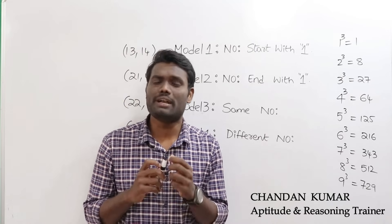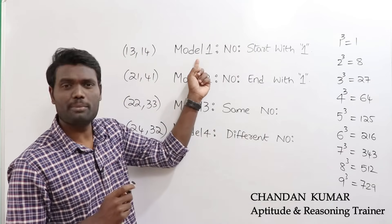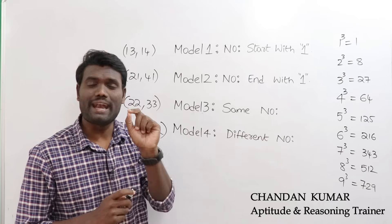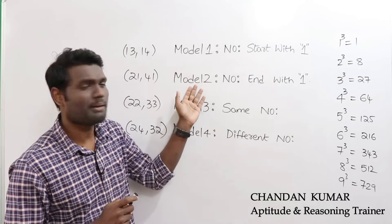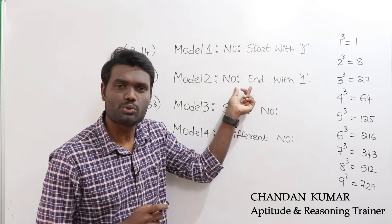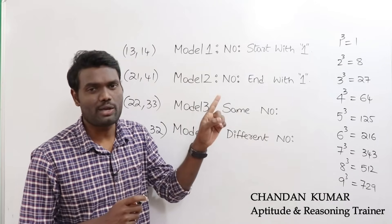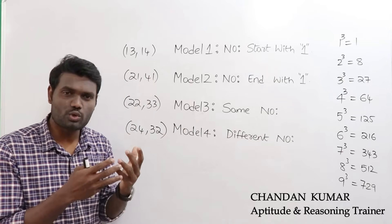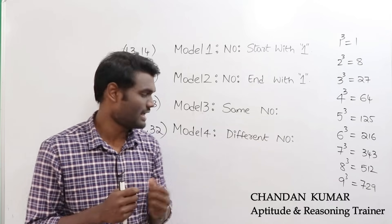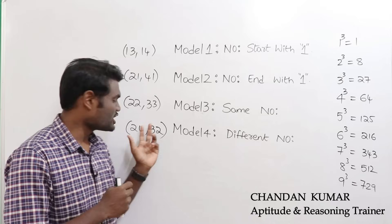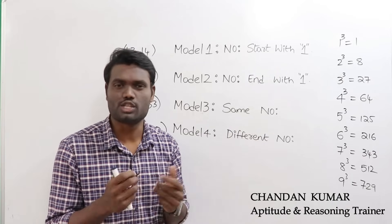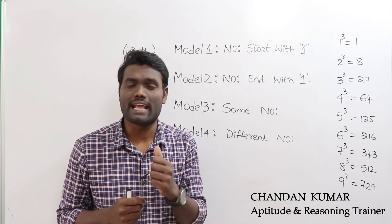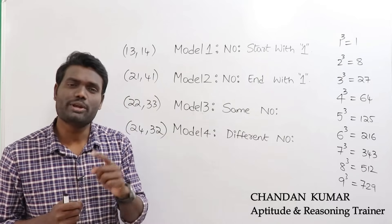We'll be dividing this into four different models. Model one covers numbers starting with one, like 13, 14, 15. Model two covers numbers ending with one, like 21, 31, 41. Model three covers same-digit numbers like 22, 44, 55. Model four covers different numbers like 24, 32, 64. Once you master these four models, you can calculate the cube of any number in just two seconds.